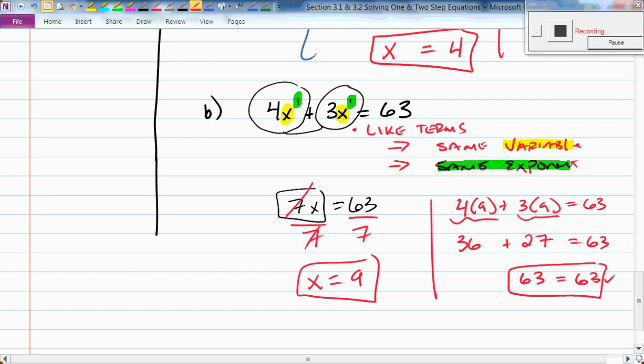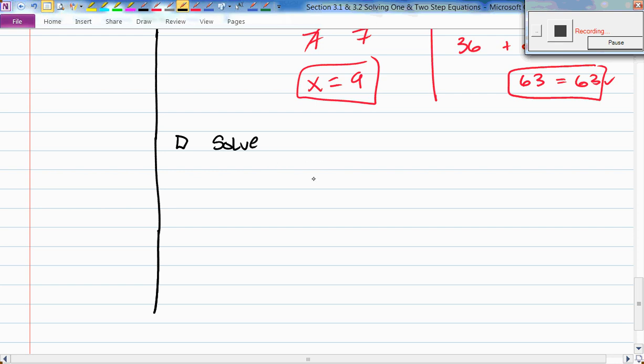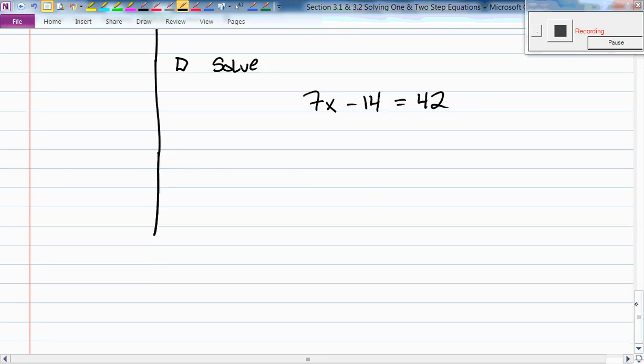Let's do this one. Let's solve. What if we have 7x minus 14 equals 42? So we're doing two steps here. One of the steps is we're subtracting 14. The other step is we're multiplying by 7. I'm going to choose to work vertically. 7x minus 14 equals 42. What's the inverse of subtracting 14? Adding 14. Very good. Negative 14 plus 14 cancels to give me 7x equals 56.